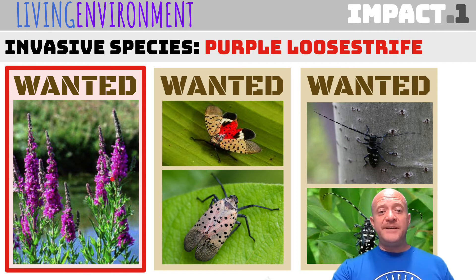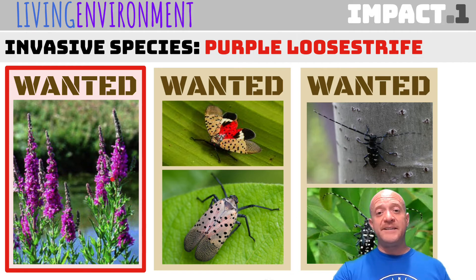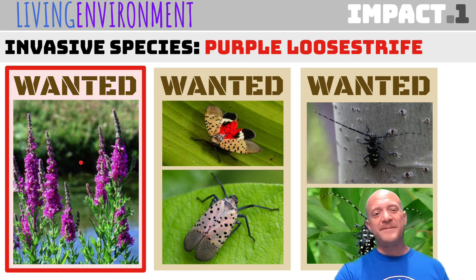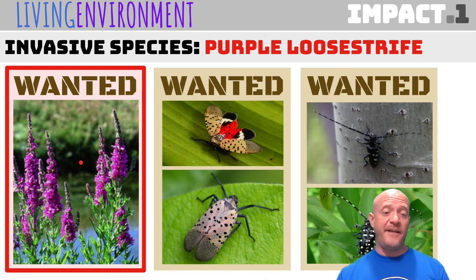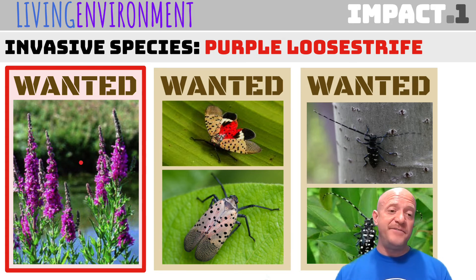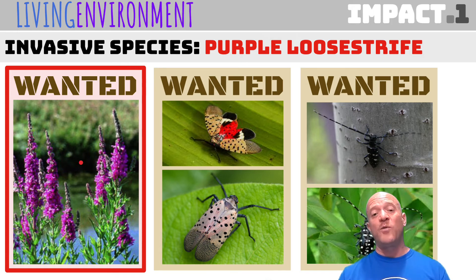Another invasive species in aquatic ecosystems is purple loosestrife. Purple loosestrife occurs upstate New York. Where I'm from in Minnesota, we had a lot of purple loosestrife that was very invasive. It looks really pretty, but it is very easily spread and it grows in aquatic ecosystems.